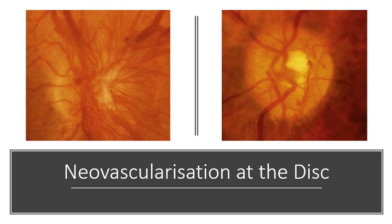Neovascularization can also occur at the optic disc, described as NVD — neovascularization at the disc. If you see the term NVE in a patient's file, that stands for neovascularization elsewhere, meaning it's occurring somewhere in the retina but not at the disc. In this photo you can barely see the optic disc because a mottled mass of new blood vessels is covering it, while in another image there's just a small area of neovascularization.